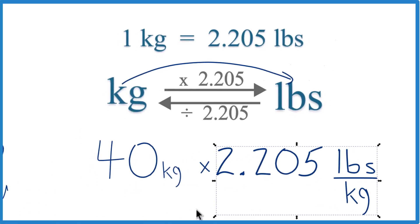So we have 40 kilograms, we multiply by 2.205, and that's pounds per kilogram. That comes directly from our conversion factor.